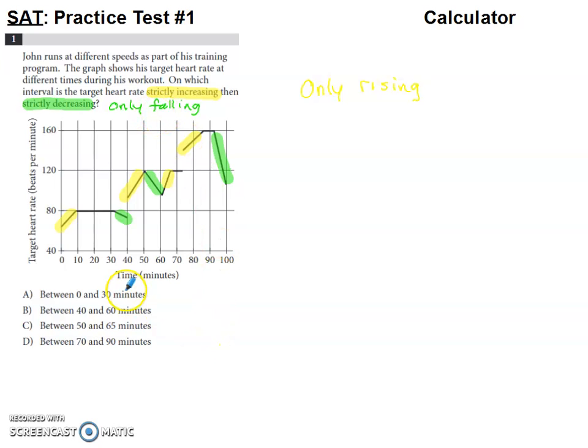So if we look at our options here, it says between zero and 30. So from time zero to time 30, we do go up initially, but then we level off. So on this stretch, we are strictly increasing, but on this stretch, we're neither increasing or decreasing.